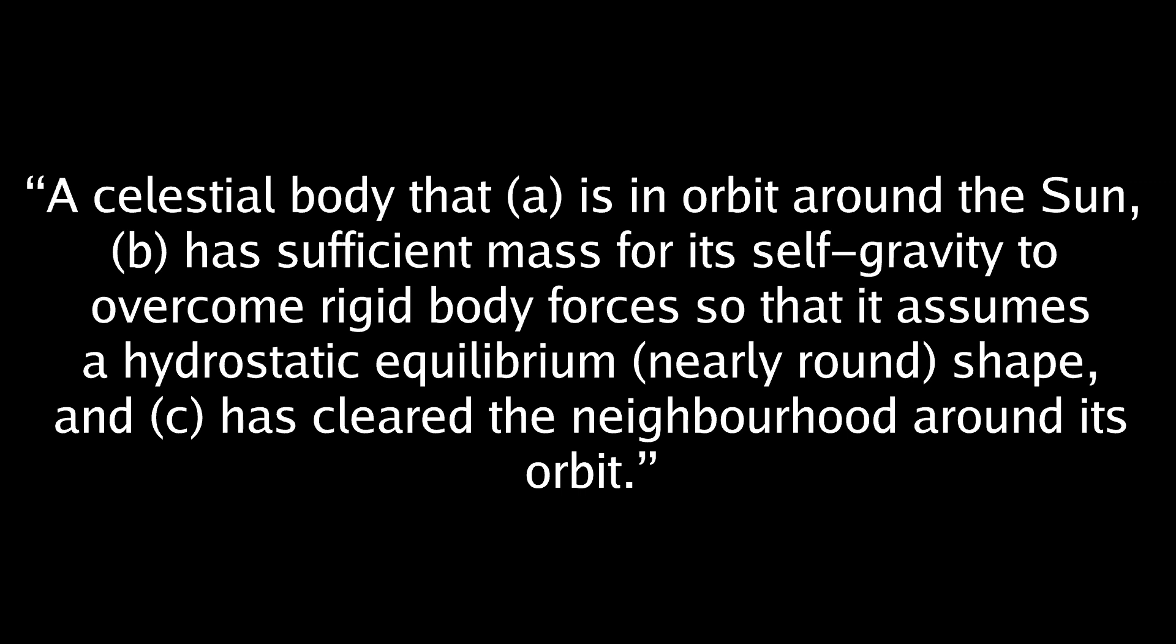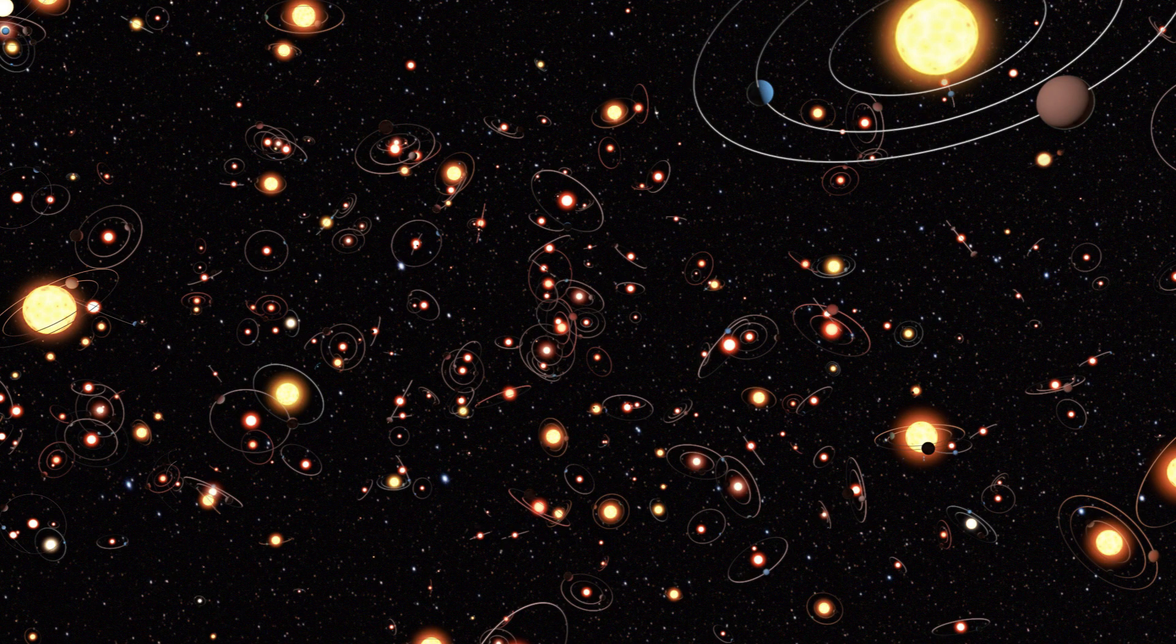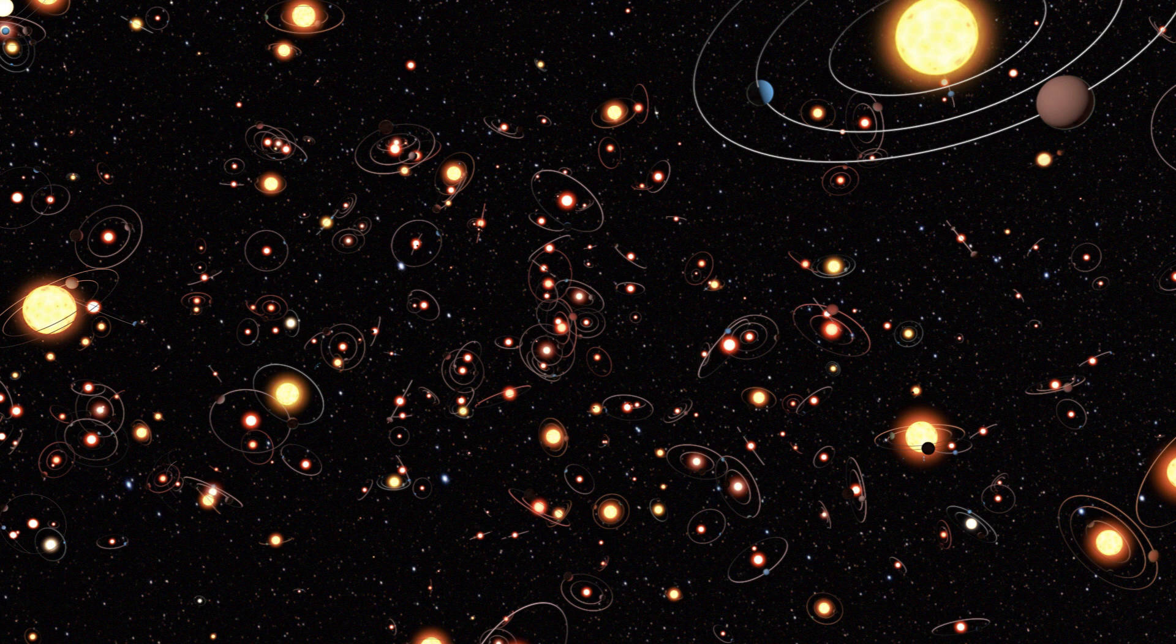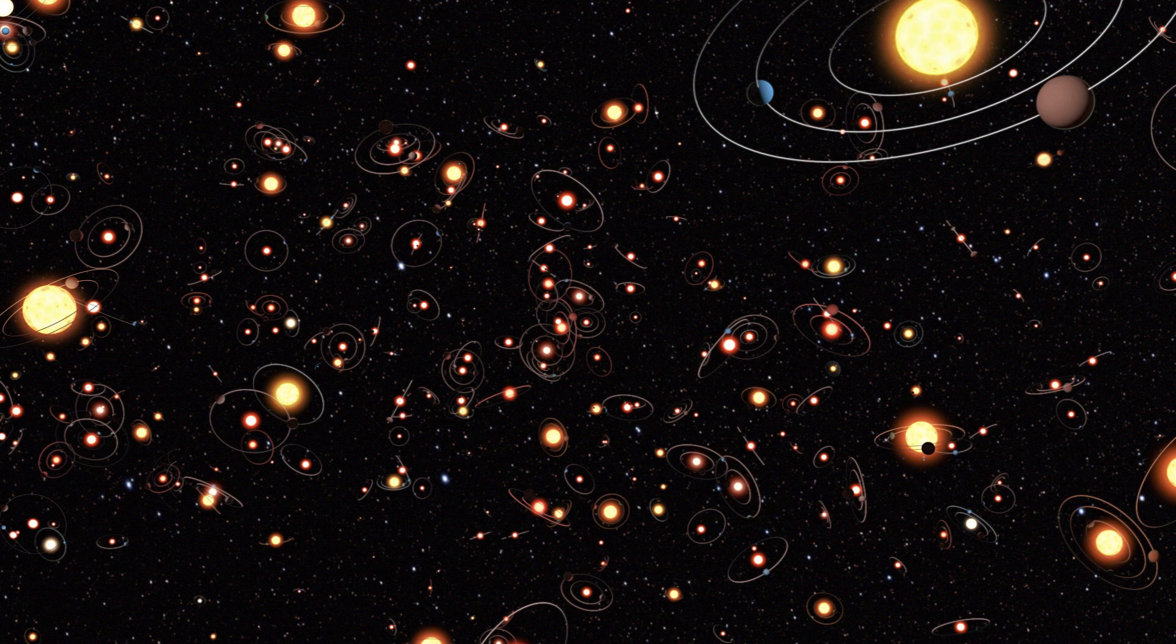Most obviously, the requirement that it must orbit the sun. Are the over 5,000 exoplanets not considered planets just because they orbit a star that isn't the sun? Maybe that's why they're often called exoplanets instead of planets, but I think most would agree these are planets too.